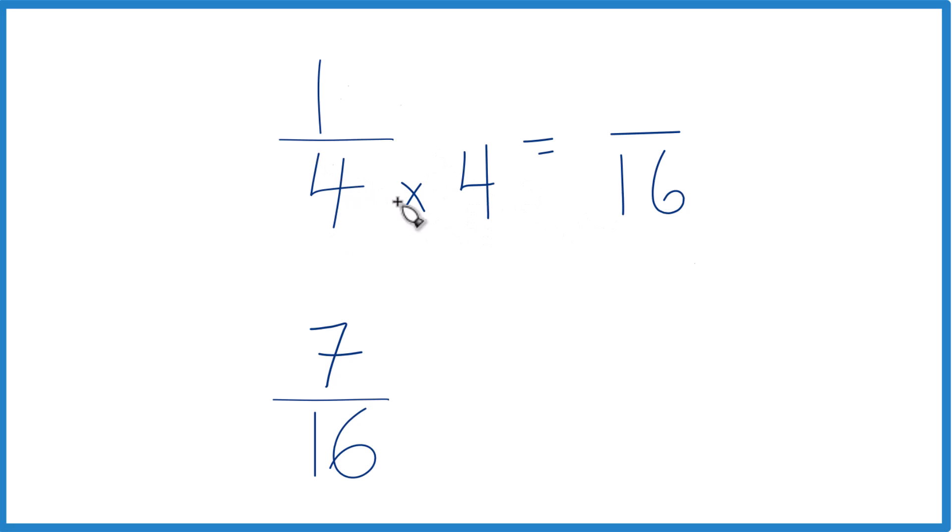But we can't just do this to the denominator. We have to multiply it by the numerator as well. So 1 times 4 is 4. And 4 sixteenths, that's an equivalent fraction to 1 fourth. They have the same value, just written a different way.